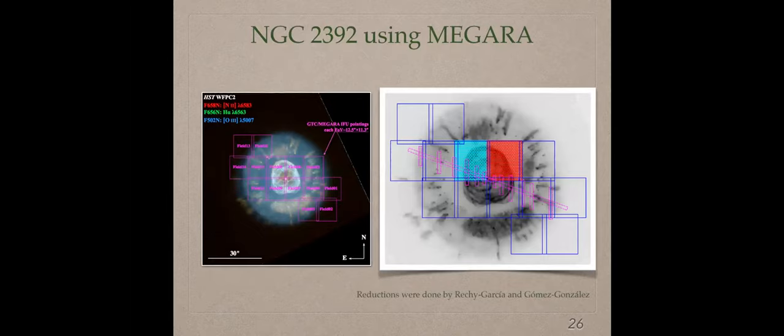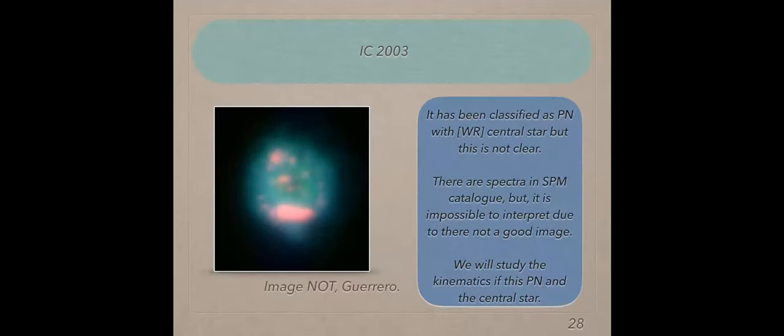Furthermore, due to the multiple fields of Megara on this planetary nebulae, it's possible to study the kinematics and density of the different cometary knots seen in this planetary nebulae. You can observe, for example, the field 11 or the field 12, that the field is centered in this cometary knot. It's very useful to use Megara in order to study the density or the velocity or different things. We have a lot of information using this instrument.